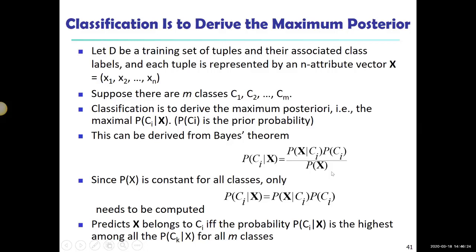A student asked why they didn't just use N divided by N, a constant, instead of P(X). The instructor explained that Bayes' theorem is conditional probability theory. The joint probability of C and X co-occurring can be written in two ways. Moving P(X) to the denominator gives us the posterior probability. It has to be P(X) in the denominator — only in this case can we simplify by ignoring it.